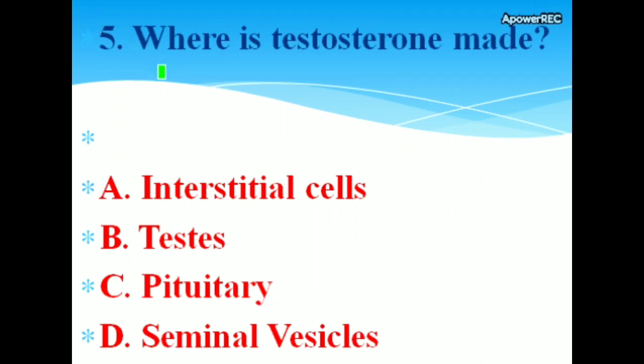Where is testosterone made? Options: A. Interstitial cells, B. Testis, C. Pituitary, D. Seminal vesicles. The correct answer is testis.